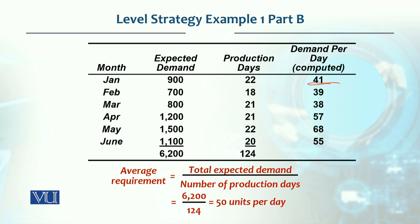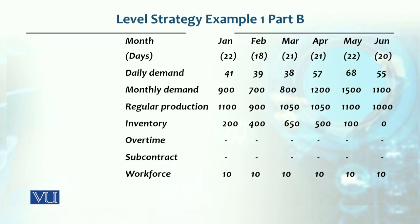Similarly for March, 800 divided by 21 is 38. I showed March's calculation because this will be used in other plans as the lowest demand period. This calculation was done on a previous slide — the average demand comes out to 50 units per day.